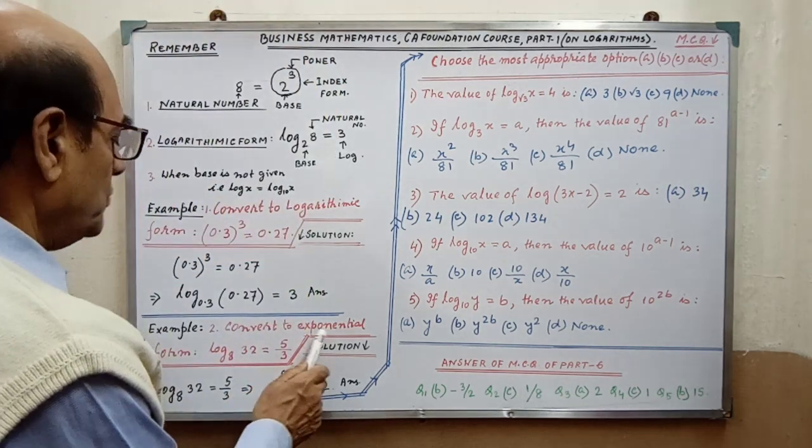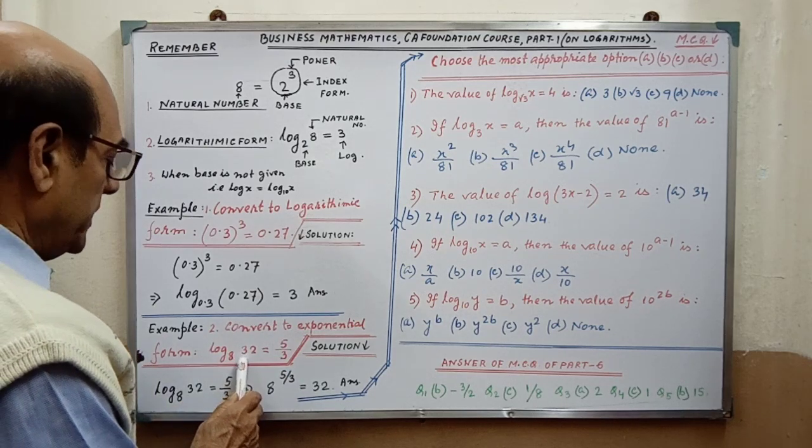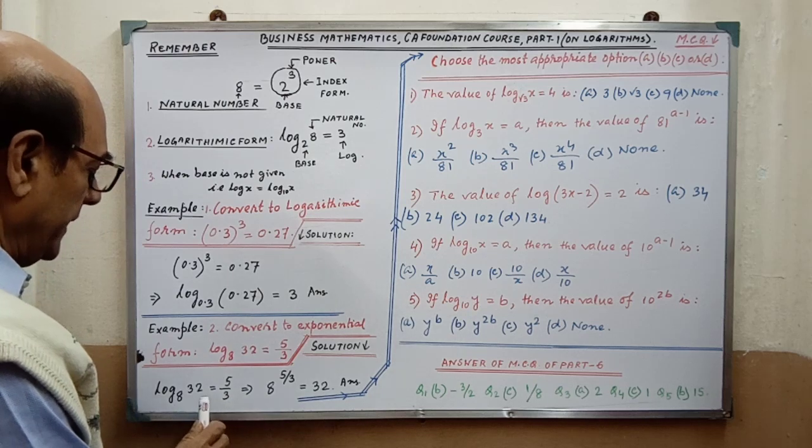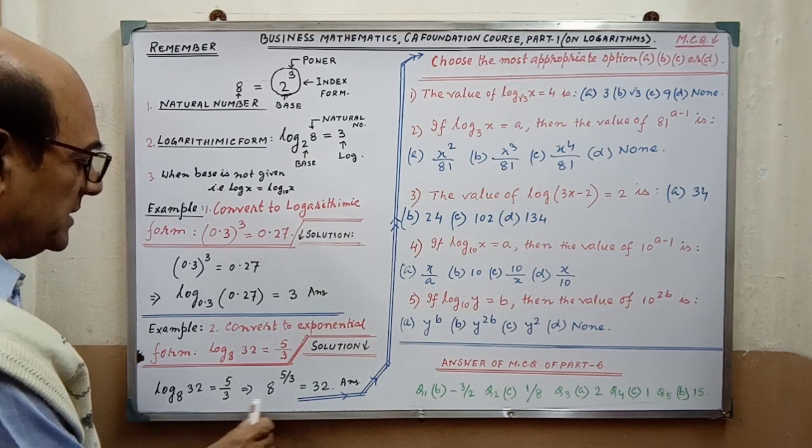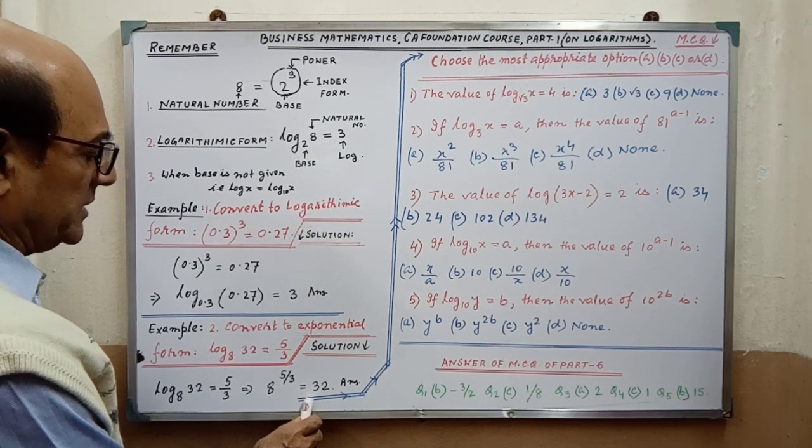Next, convert to exponential form. It is given in logarithmic form, we have to convert into index form. So after writing, base is 8, so 8 to the power 5 by 3 equals 32.